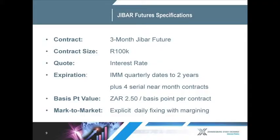Let's look at the specifications for the futures. As you can see on our presentation, the contract size is 100,000 nominal. It's quoted on an interest rate, and it has 12 expiries. The basis point value — in other words, how fast this contract moves — is determined by a fixed equation: it's 2.50 per basis point per contract, which equates to 25 rand per million rand notional movement. Being a future, it's marked to market daily for margining purposes.